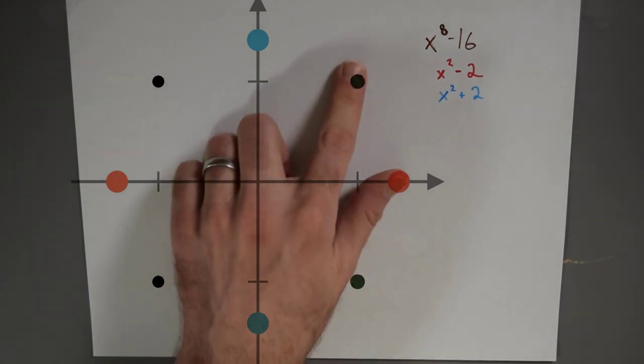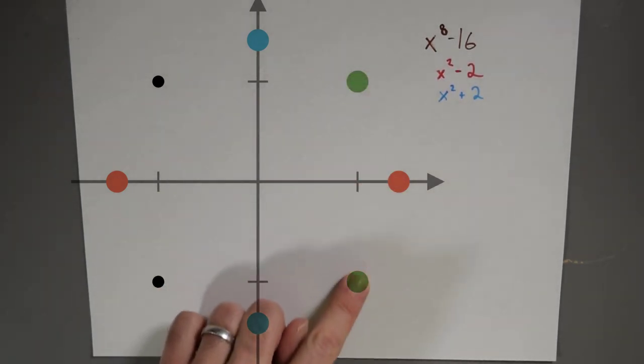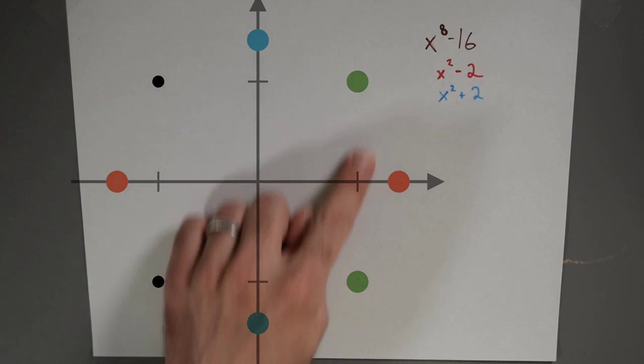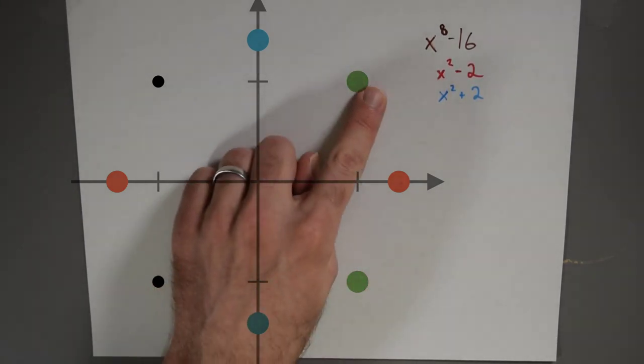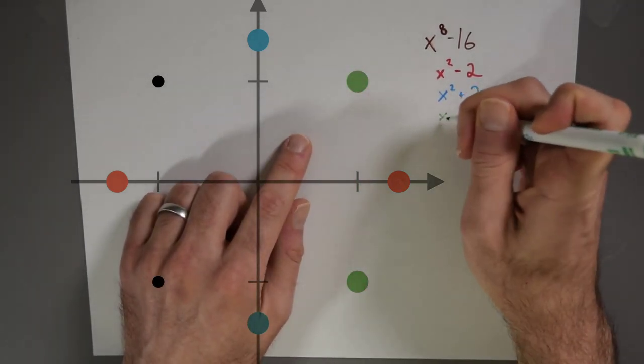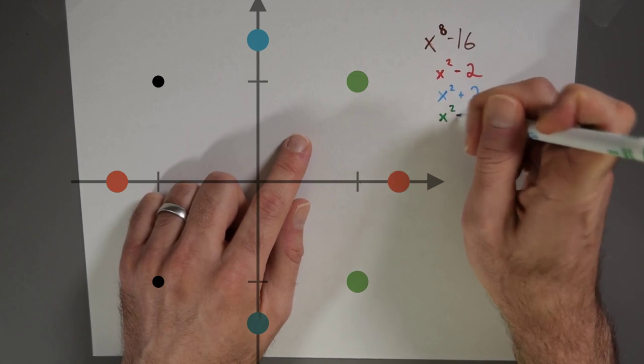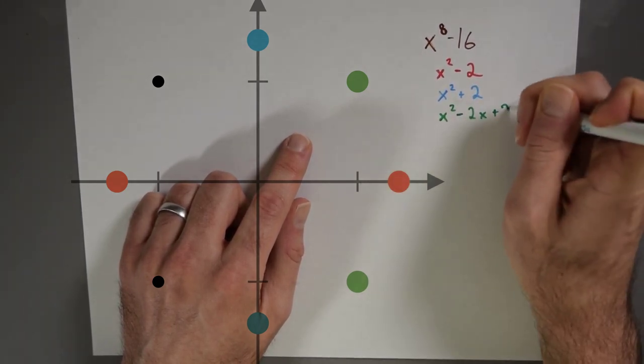And then here in green, I've got two roots which together give me the polynomial x squared minus 2x plus 2.